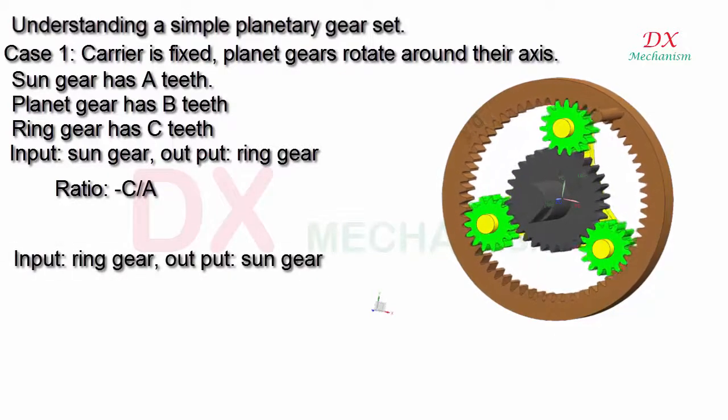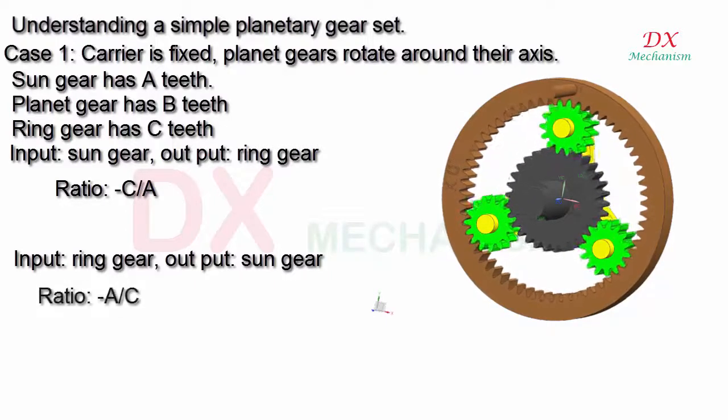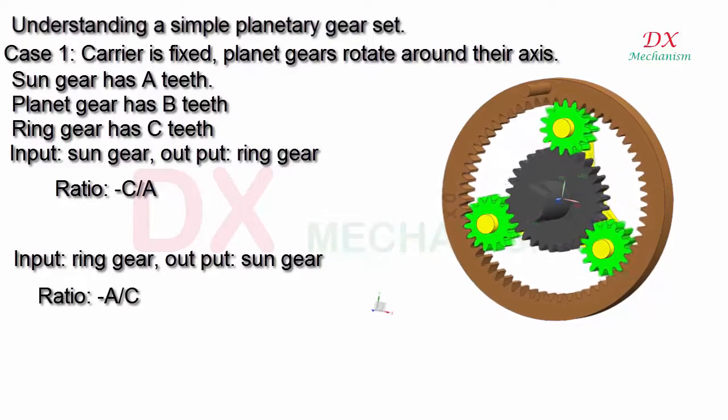Input: ring gear. Output: sun gear. The formula of ratio equals A over C.